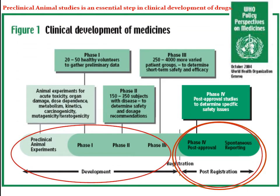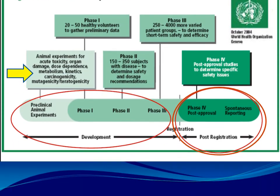This is the clinical development of any medicine. According to the WHO, there should be pre-clinical animal experiments to test acute toxicity, organ damage, dose dependence, metabolism, kinetics, dynamics, and carcinogenicity. All these are called pre-clinical animal studies and are essential in the development of any drugs before applying to patients or volunteers in phase one.